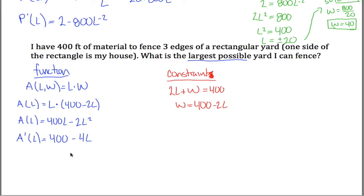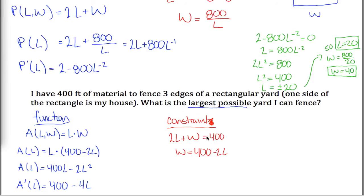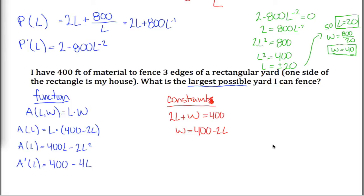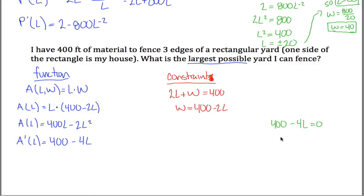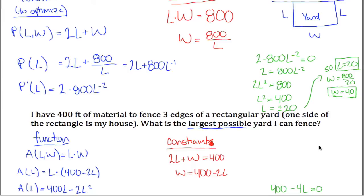Taking the derivative using the power rule: A'(L) = 400 − 4L. To find the critical value, I set the first derivative equal to 0: 400 − 4L = 0. Adding 4L to both sides and dividing by 4: L = 100. So the optimal length is L = 100.